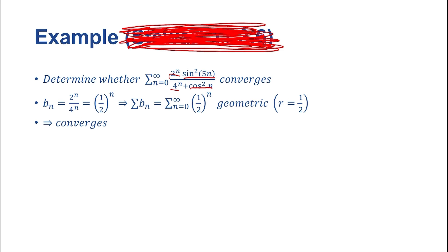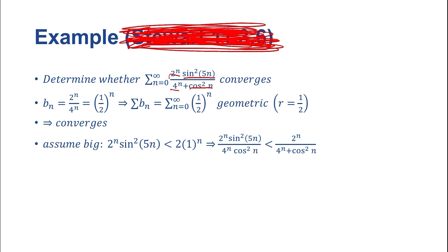Now we actually need to set up the comparison. We need to make sure that the series we're comparing it with is always larger than the series we're being asked about. First, we're going to play around with the numerator. To assume that it's larger, we're going to assume the numerator is going to be big — we're going to assume that the sine function takes the largest possible output, which is 1, because the maximum of sine squared is 1. So if we assume big, then our numerator is always going to be less than 2 to the n times 1, which is just 2 to the n. So 2 to the n times sine squared of 5n over 4 to the n plus cosine squared of n is always less than 2 to the n over 4 to the n plus cosine squared of n.